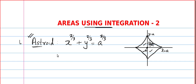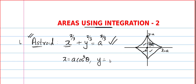One more thing: the parametric form. This is the Cartesian equation — meaning the equation in x and y. The parametric form is x = a cos³θ and y = a sin³θ.